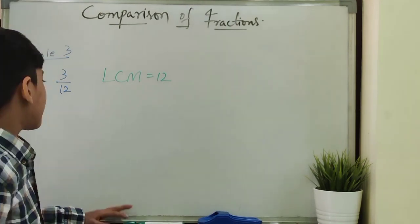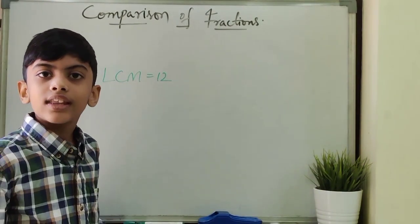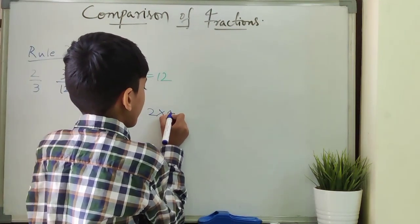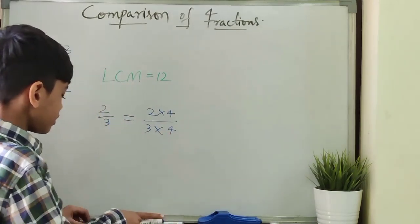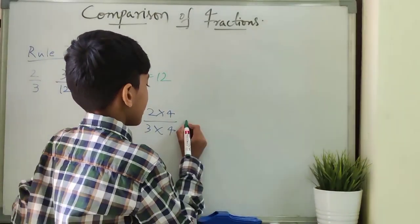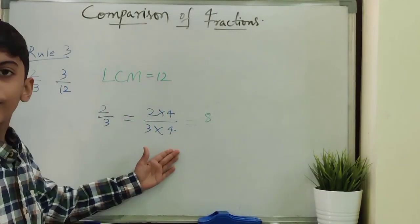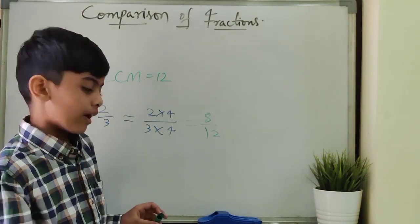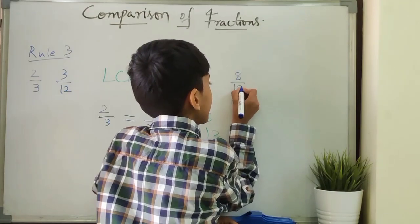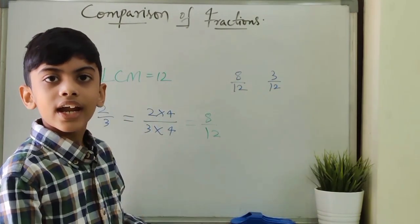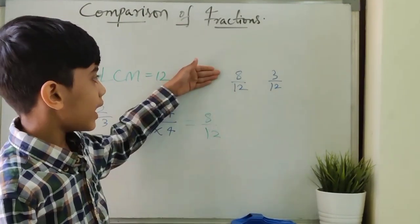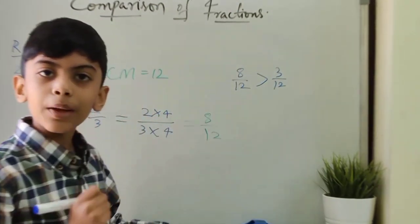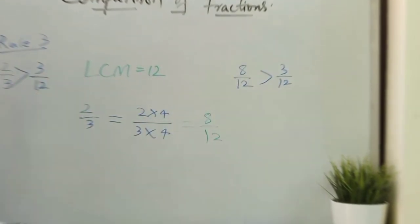So we got the LCM of 3 and 12 as 12. To make the denominator of the first fraction as 12, we need to multiply the fraction with 4. So 2 by 3 is equal to 2 into 4 by 3 into 4, which gives 8 by 12. In the second fraction, the denominator is already 12. So now the fractions are 8 by 12 and 3 by 12. Here denominators are equal, so compare numerators. 8 is greater than 3, so 8 by 12 is greater than 3 by 12. That means 2 by 3 is greater than 3 by 12.